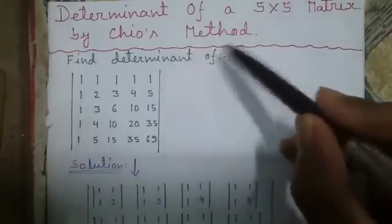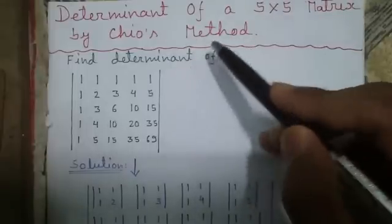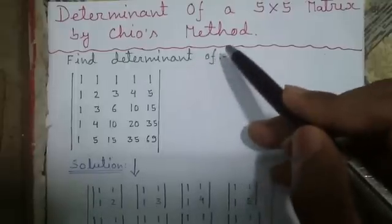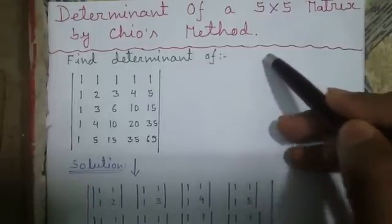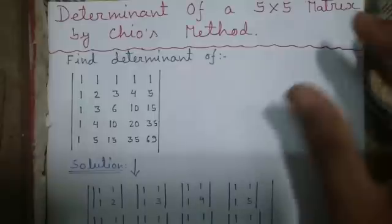Chiyo's method is a very easy method and can be used to find determinant of square matrices of any order. Say 3 cross 3, 4 cross 4, 5 cross 5 up to n cross n.